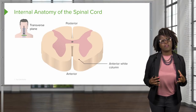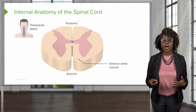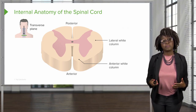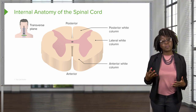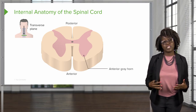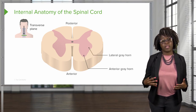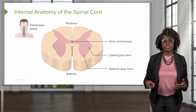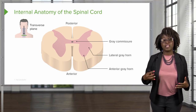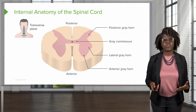In the white matter of the spinal cord, the anterior portion contains the anterior white column, the lateral portion contains the lateral white column, and the posterior portion contains the posterior white column. In the gray matter, the anterior portion has the anterior gray horn, the lateral portion has the lateral gray horn, and the center crossbar is referred to as the gray commissure, which gives the gray matter its butterfly or H shape. The posterior portion contains the posterior gray horn.